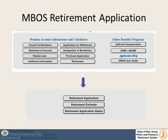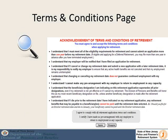To get from the home screen to the retirement application is two mouse clicks. On the home screen you will see a button that is labeled 'Retirement.' If you click on that button it will bring you to another screen where you will see a button labeled 'Retirement Application.' If you click on that button, it will get you to the retirement application. Even before you get to the application itself, you will see a terms and conditions page.